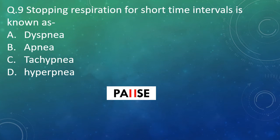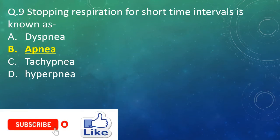Question 9: Stopping respiration for short time intervals is known as? Option A: dyspnea. Option B: apnea. Option C: tachypnea. Option D: hyperpnea. And the right answer is Option B — apnea.